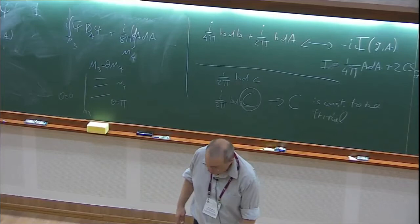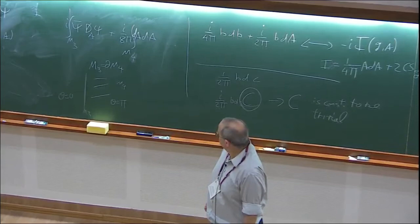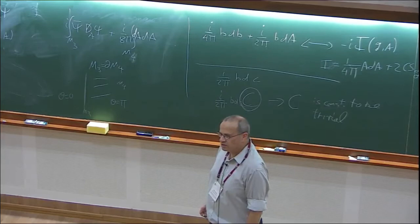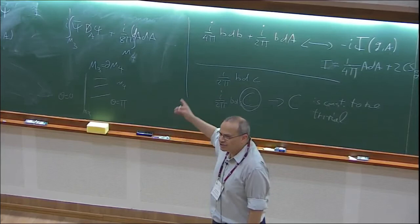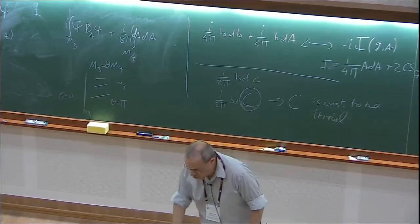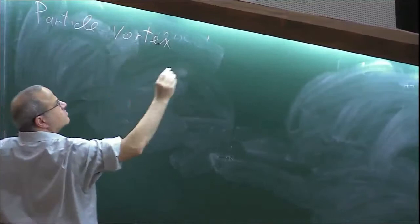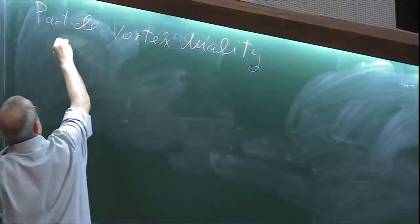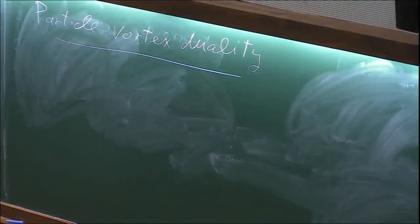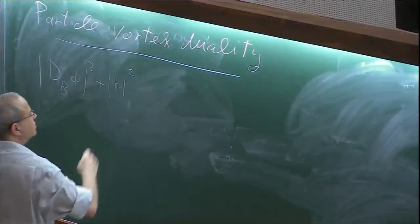I would like to change the topic a little bit. I'll write the statement, and then I'll explain what I mean. From this point on I'll change signature to be Euclidean. I'll first write the statement and then define what the various symbols mean and what the physics is.